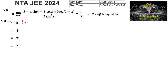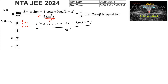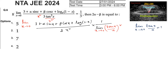So let us multiply and divide by x² in the denominator, so that we can write: limit x tends to 0 of [3 + α·sin(x) + β·cos(x) + log(1 - x)] / x², multiplied by 1 over [limit x tends to 0 of (tan(x)/x)²]. We know that limit x tends to 0 of tan(x)/x equals 1, and this limit value is equal to 1/3.